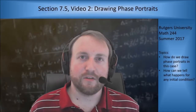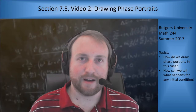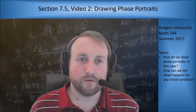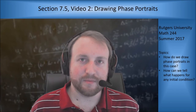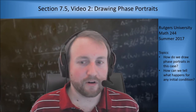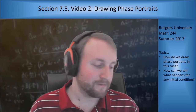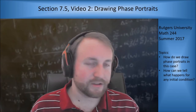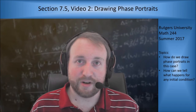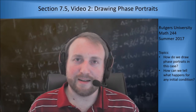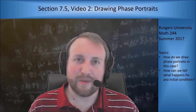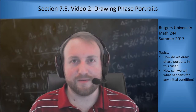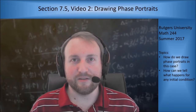Welcome to the second video of section 7.5. In this video we're going to take what we did last time — finding the general solution for a system of ODEs in one of the three cases for the possible eigenvalues — and use that to draw a phase portrait for that system. This video is going to be pretty general, but I want to hit all the bases and describe how you would do it. The next video will have examples for specific cases so you can see how it looks.